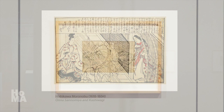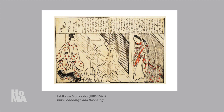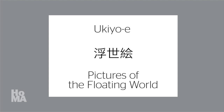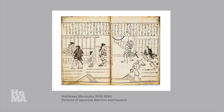In our last video, we talked about Hishikawa Moronobu, one of the earliest known designers of Japanese prints. We also discussed the term ukiyo-e, literally 'pictures of the floating world,' which was coined by Moronobu's contemporaries during the course of his career. Ukiyo-e refers to paintings and prints that celebrate the pursuit of pleasure by commoners in early modern Japan.